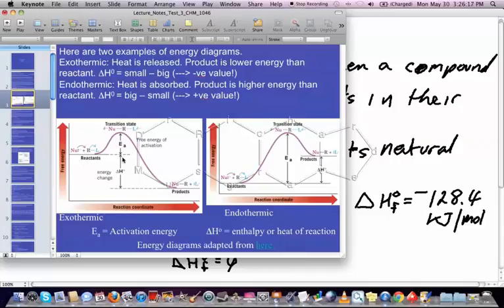The two features of the energy diagram that are important here. You've got the activation energy. And here's your delta H0. It's just the difference in the energy between the reactants and the products. And you can see it in each instance here.